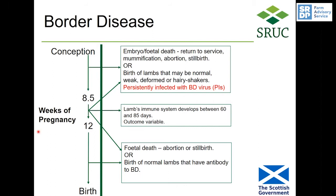This slide shows a timeline from tupping through to birth. Between around weeks 8.5 and 12 of pregnancy, the lamb's immune system develops. If they get infected with border disease before this time, a whole range of things can occur: the embryo or fetus can die, the ewe may return to service, the lamb could be mummified, or you could get abortion or stillbirth.